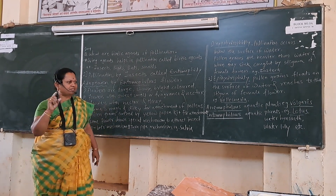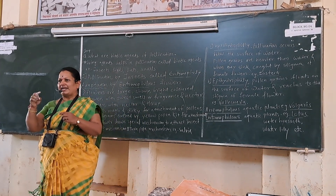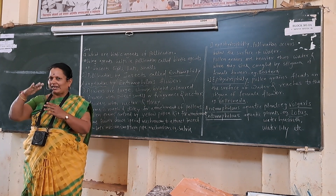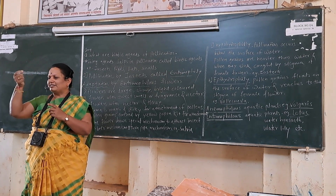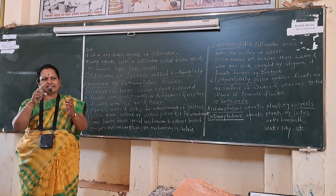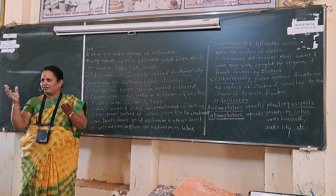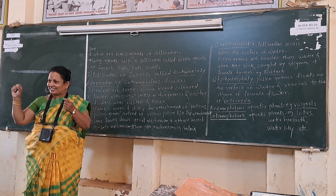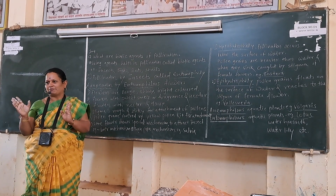Salvia is a special type of flower in which an insect comes and sits on one petal. That petal vibrates so that the anther, which contains pollen grains, strikes the wings of the insect. When that insect goes to another flower, the pollen grains from the first flower are carried to the second flower, and pollination takes place.